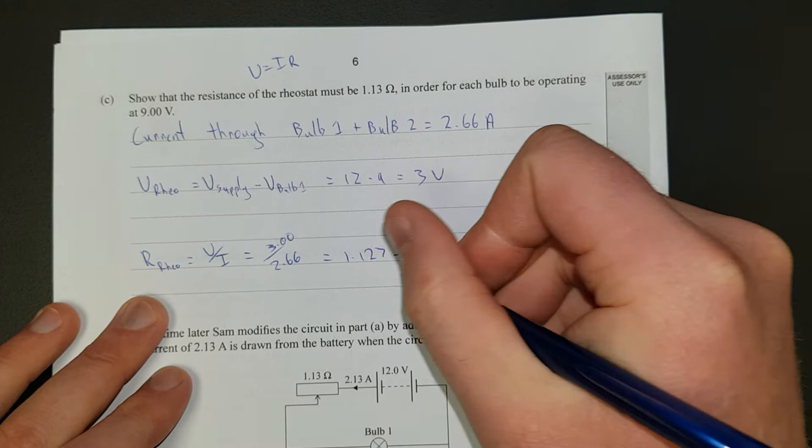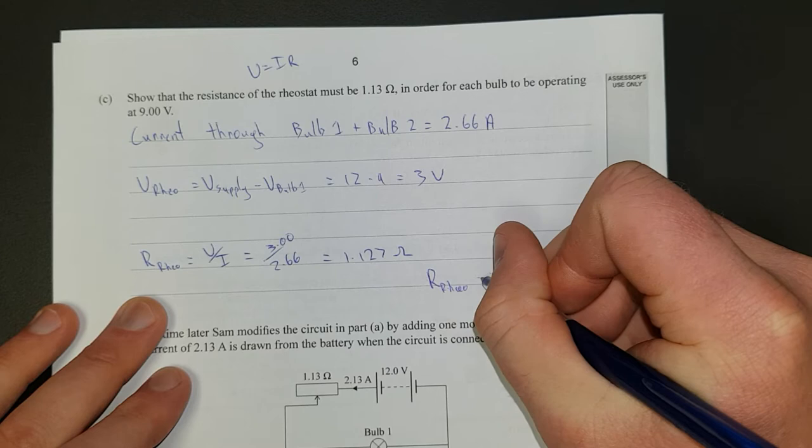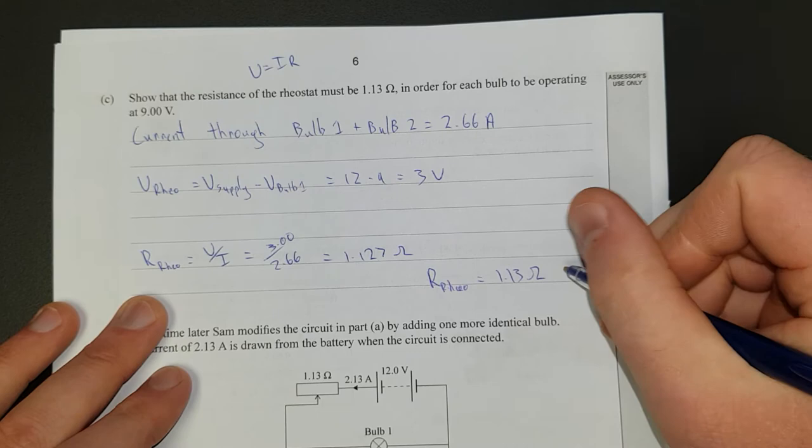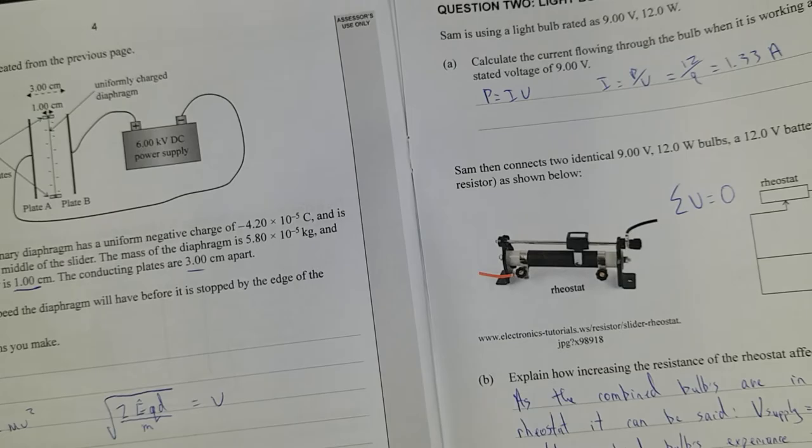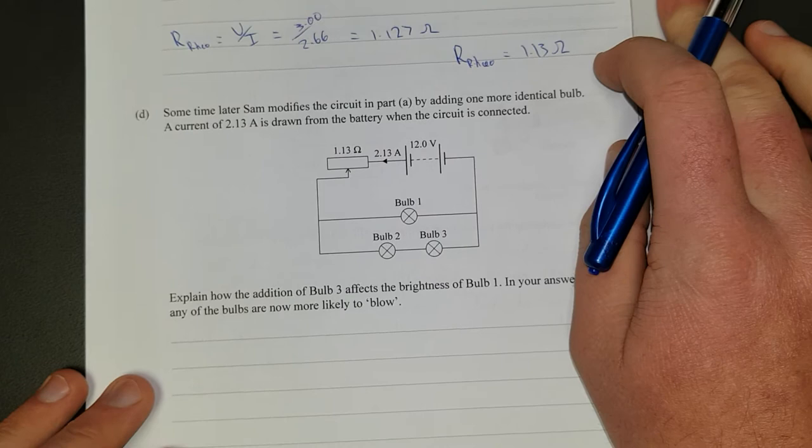But it needs to be 3SF, so I'll write it fancy down the bottom, R-Rio is equal to 1.13 ohms. That's 3SF. Everything on this page has been 3SF so far. Sweet, last question.